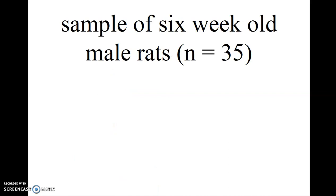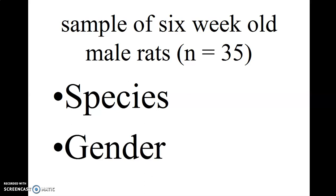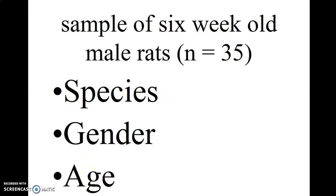Here is an example. Imagine we have a sample of six-week-old male rats, 35 of them. One constant in this sample would be the species. They are all rats. Another constant would be gender. They are all male rats. And yet another constant would be age. They are all six weeks old.